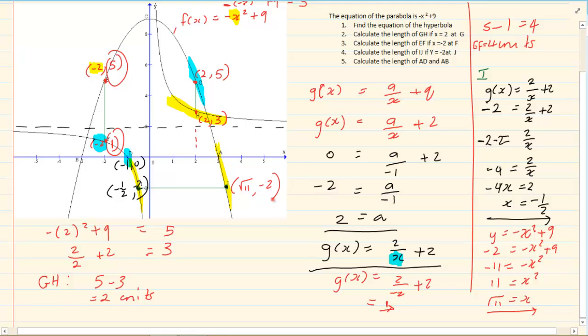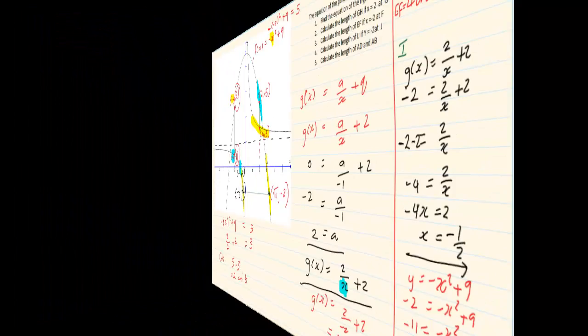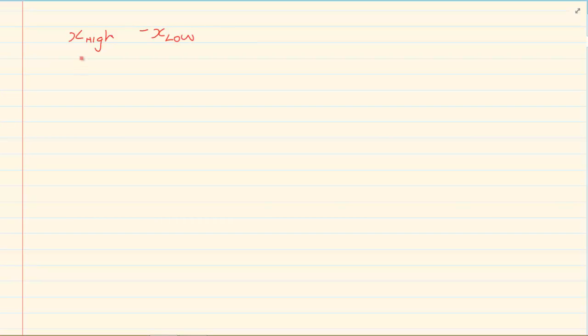So what is the length of IJ? To get the length of IJ, we say the x of the high minus the x of the low. That means root of 11 minus minus a half. Using your calculator, the length is equal to 3.8 units.